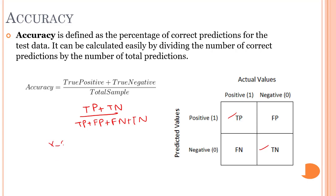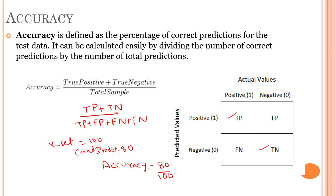For example, let's say a test set has 100 images and our model correctly predicts 80 of them. The accuracy of our model is 80 correct predictions out of 100 total predictions, which is 0.8 — or 80% accurate. So we can say that our model is 80% accurate.